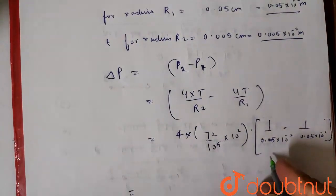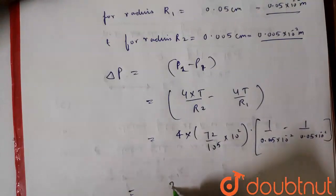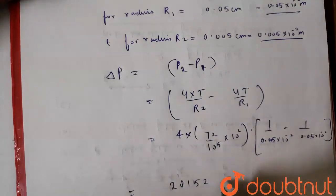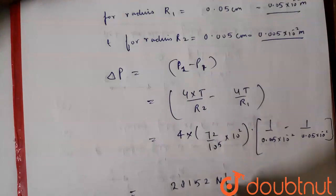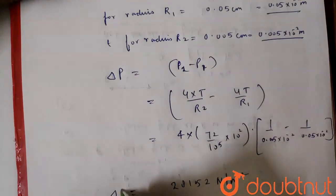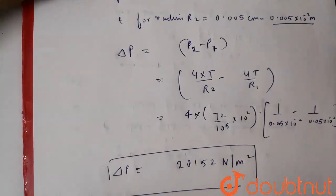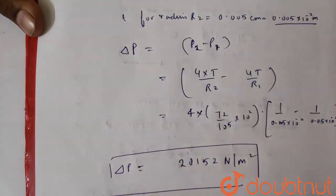If we solve this we will get 28,152 newton per meter square. That is the excess pressure. So this is the final answer.